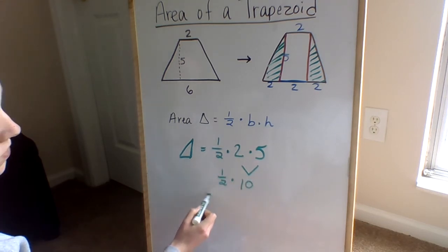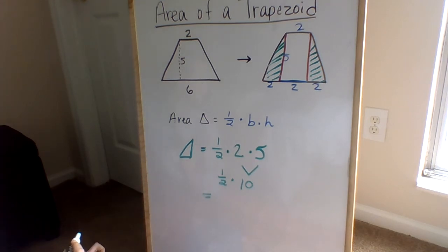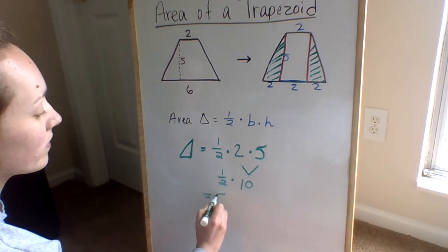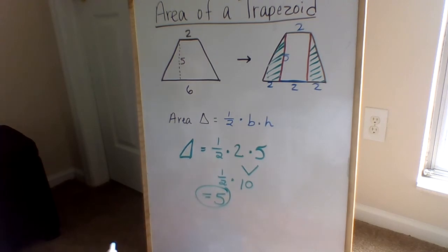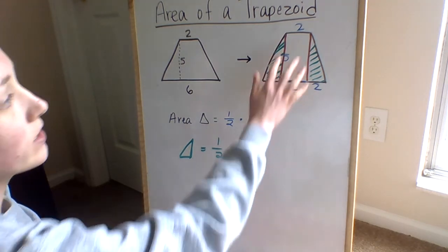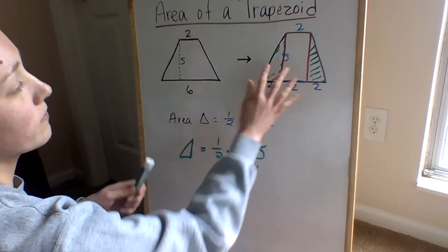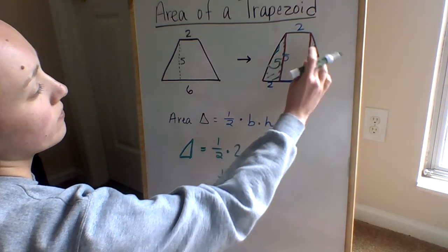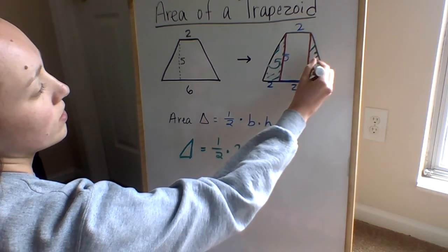Then we're going to drop it down. What is half of ten, or ten divided by two? Good, it's five. So each triangle is going to have an area of five. So this is five, and this is five.